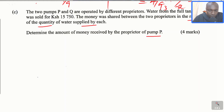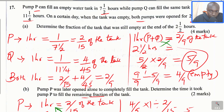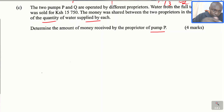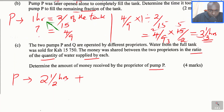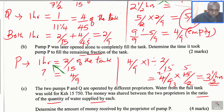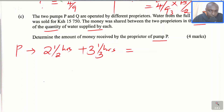We need to get the total time that P took to fill the tank. Initially, in Part A, both pumps were opened for 2 and a half hours — so P ran for 2 and a half hours first. Then in Part B, pump P was opened alone for 3 and a third hours. So we add those together to get the total time taken by pump P.